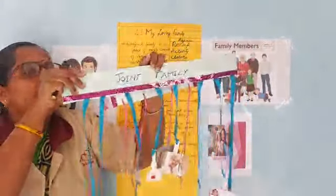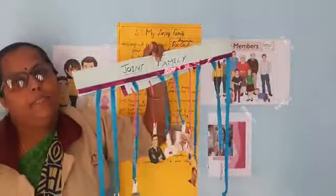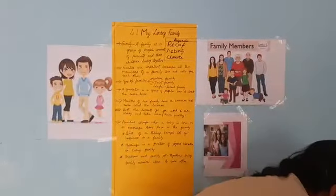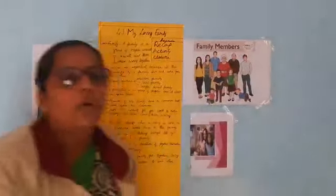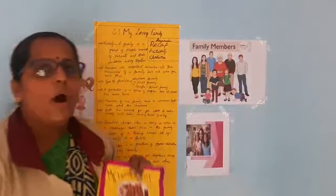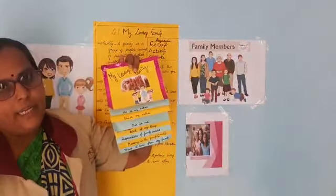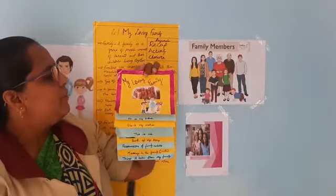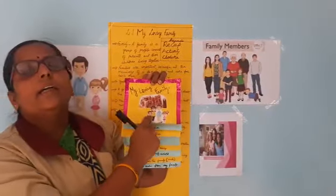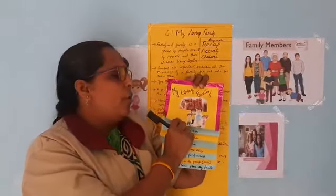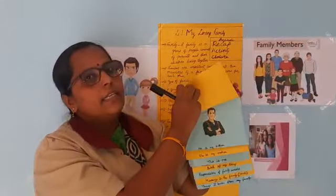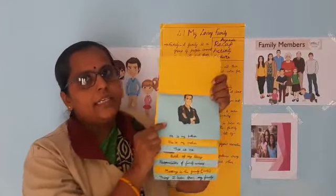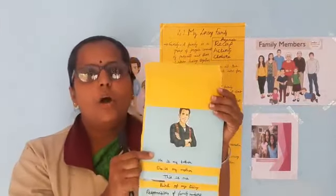Children, you also can make this activity of your own family members. Now the next activity we are going to see — let us look at the flip book of Ranjit's family. This is a flip book of Ranjit's family. Ranjit has taken his family for a talk. This is Ranjit's father — he is a doctor.